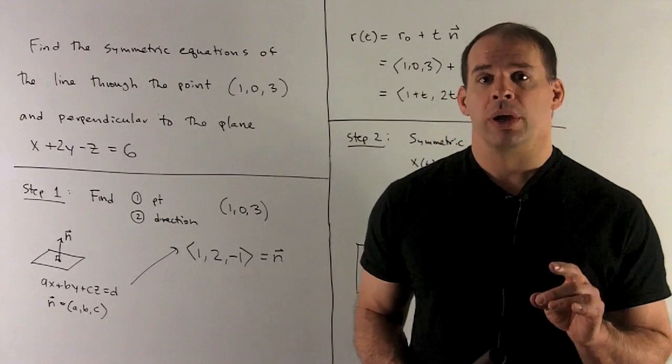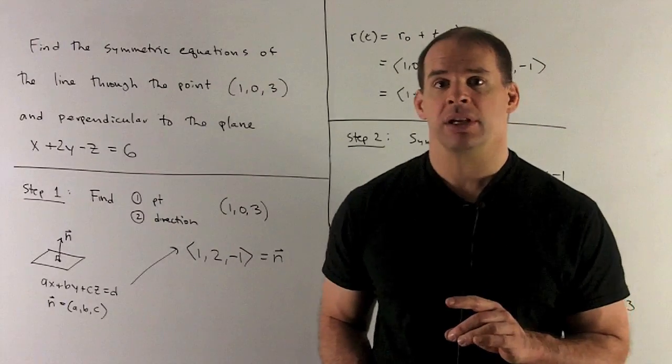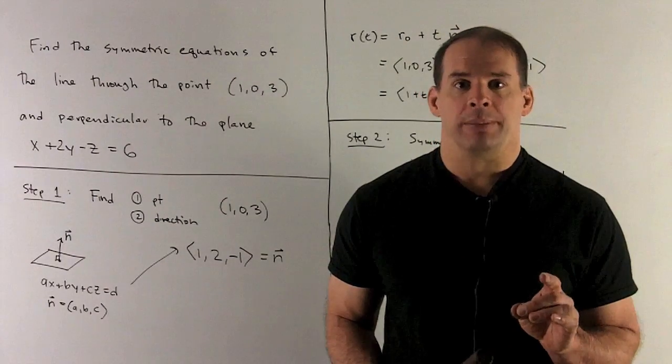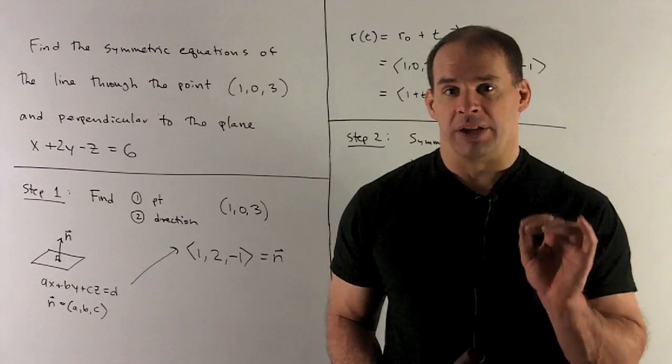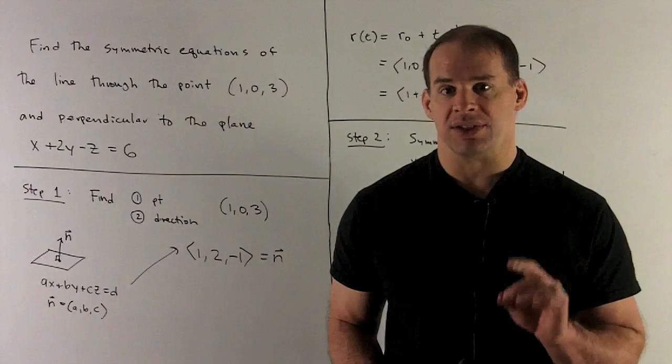Well, we're told perpendicular to the plane x plus 2y minus z equals 6. So what do we get from that equation? Well, if I'm given the equation of a plane, I can get the perpendicular direction, the normal direction, by peeling the coefficients off of x, y, and z.